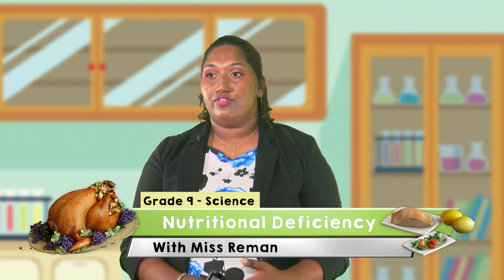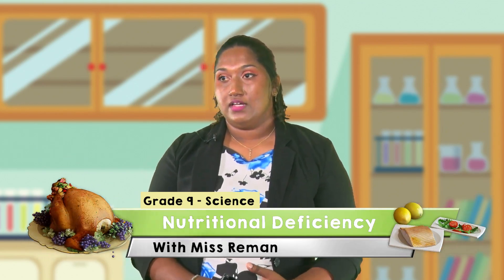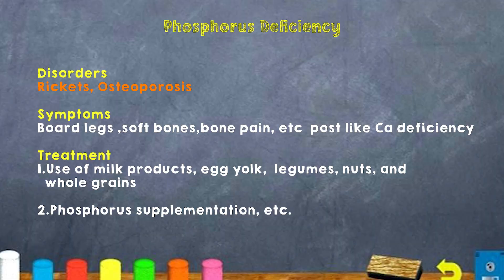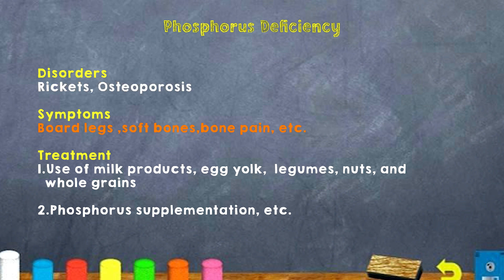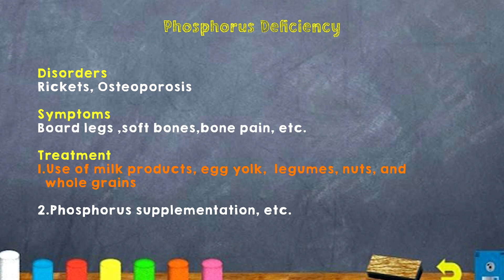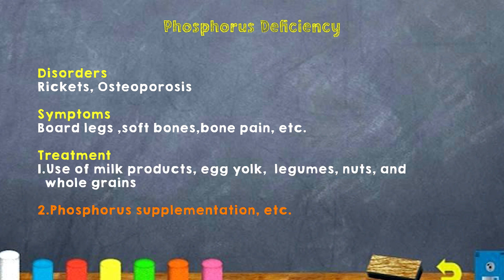Next, we look at phosphorus deficiency. This can also cause rickets and osteoporosis. Symptoms are similar to calcium deficiency and include bowed legs, soft bones and bone pain. To treat phosphorus deficiency we use milk products, egg yolk, legumes, nuts and whole grain. We can also take phosphorus supplements.